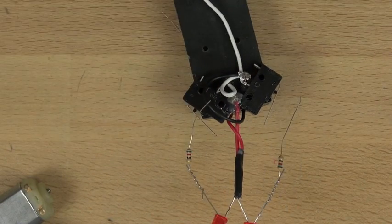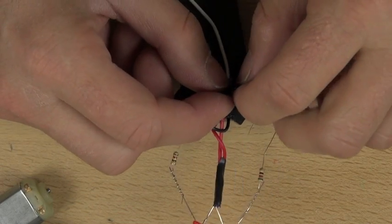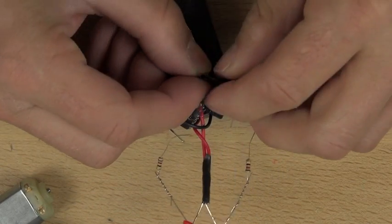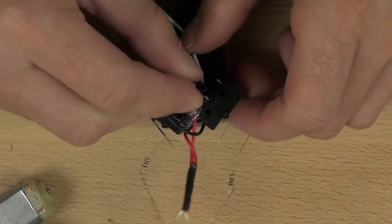And then again, to hold everything together and insulate it, we're going to take a small piece of electrical tape, about a half an inch long, and we're just going to wrap it around that and squeeze it very tightly to make sure that we've got a good connection.